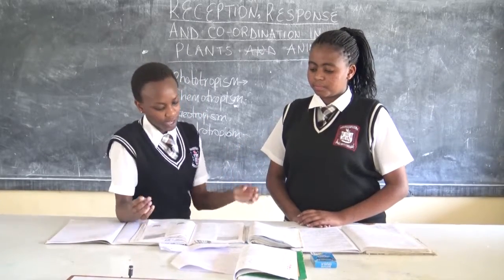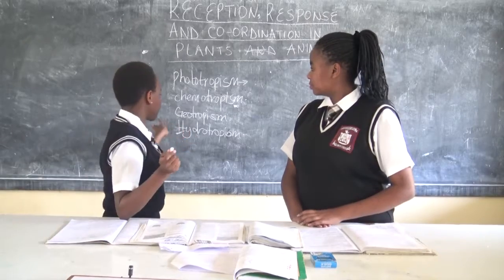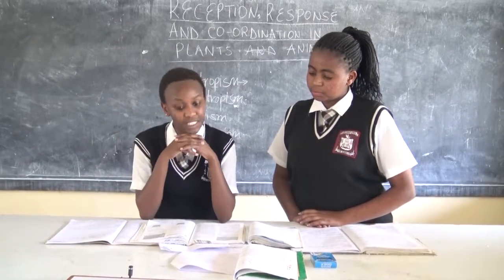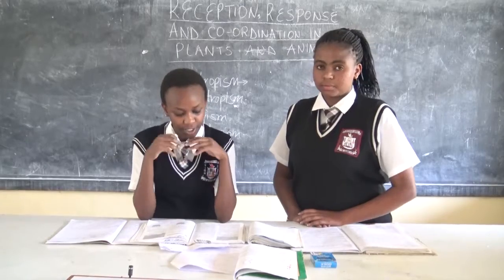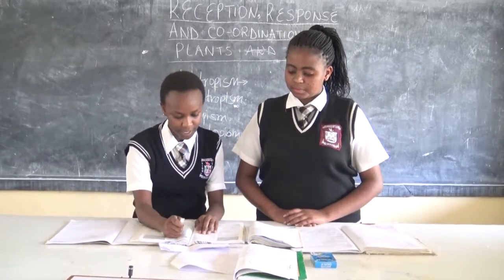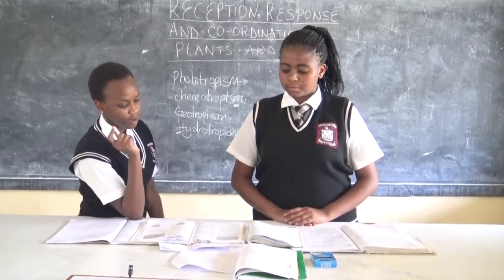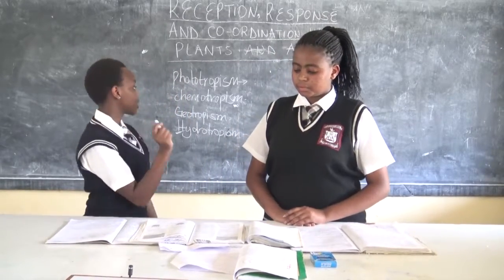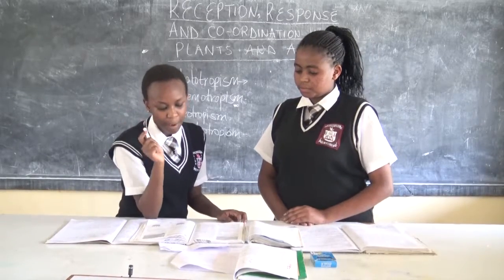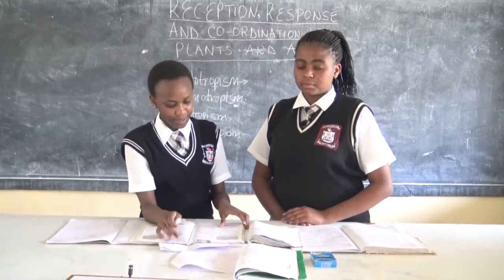Geotropism is the response to gravity. Roots are positively geotropic while shoots are negatively geotropic. Hydrotropism refers to curvature in response to water or moisture. Plants are positively hydrotrophic.